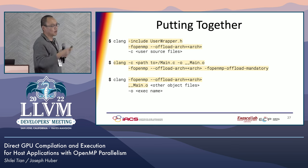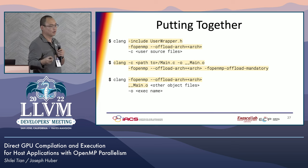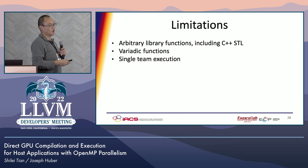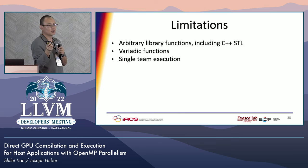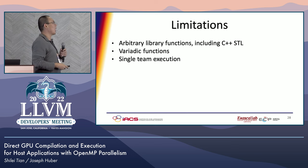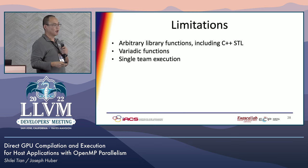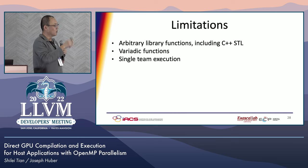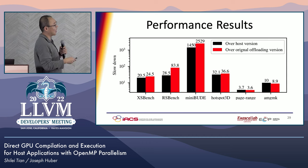To put things together: to run the entire user program on the GPU, we include the user wrapper header when compiling user source files, compile a simple host program to launch the kernel, and link them together — using OpenMP compiler flags throughout since we are using OpenMP features. Our solution does have a couple of limitations: we don't support arbitrary library function calls, because it requires device-side and host-side stub code to be written by hand or generated beforehand. We also don't support variadic functions because GPUs lack facilities to process variadic arguments. And our single-team execution severely limits the number of threads available on the GPU, which impacts performance.